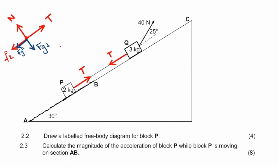In 2.3, they ask us to calculate the magnitude of the acceleration of block P while it is moving on section AB. The moment you see 'acceleration,' that tells you we are working with Newton's second law and F net is not zero. We start with F net equals M times A. But very importantly, you have to do that for every object separately. If you do this for the combined system, you will get the right answer but only 5 out of the possible 8 marks.